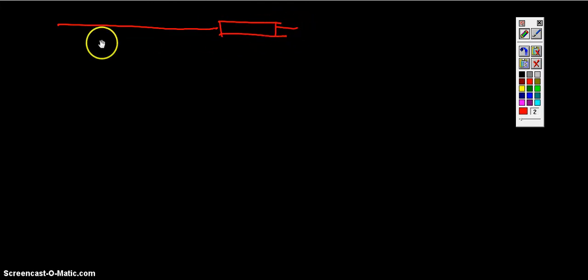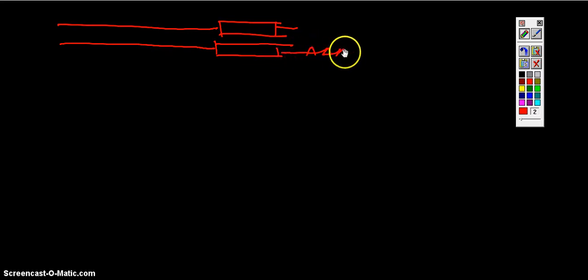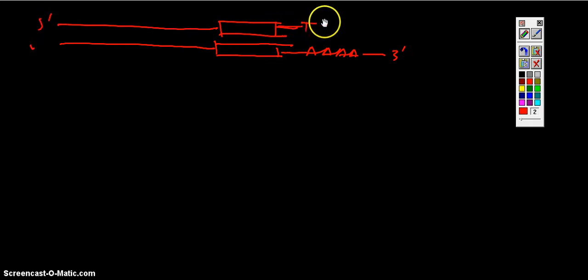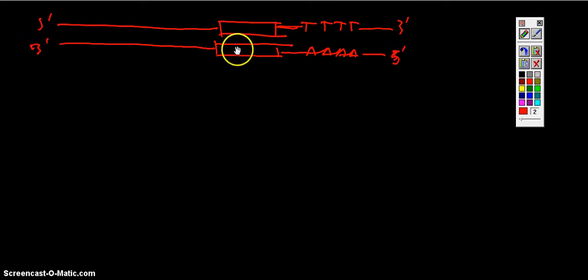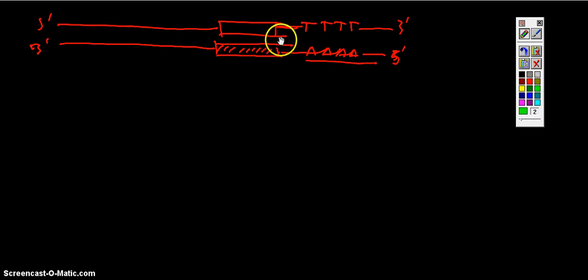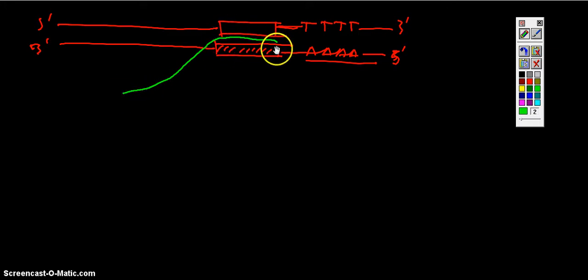So here is the palindromic sequence with its complementary sequence, and after that there is a long stretch of AAA in the DNA. This is the RNA being synthesized from the 5 prime end to the 3 prime end. It also copies this palindromic sequence, and afterwards it copies the AAA sequence as well, which becomes a poly-U stretch in the mRNA.